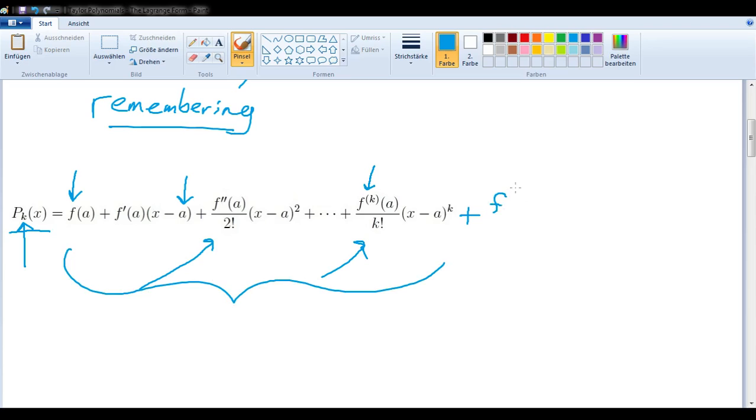If we just wanted to continue the pattern that we had already begun here, then we would now add this term. Let's define the k plus 1 derivative of f, evaluated at a, divided by now the k plus 1 factorial, and then multiplying by x minus a to the k plus 1 power this time.